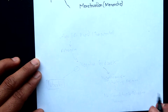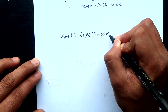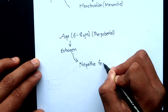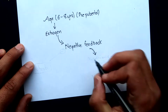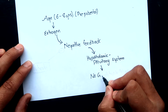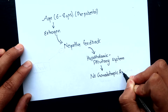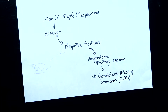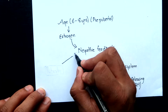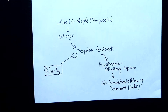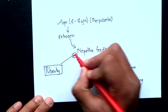At the age of 6 to 8 years, estrogen, although present in low amounts, provides a negative feedback effect to the hypothalamic-pituitary system. So no gonadotrophic hormones are produced and hence menstruation does not occur. But as puberty approaches, this negative feedback effect of estrogen is gradually lost, resulting in some significant changes in the endocrine function of the girl.